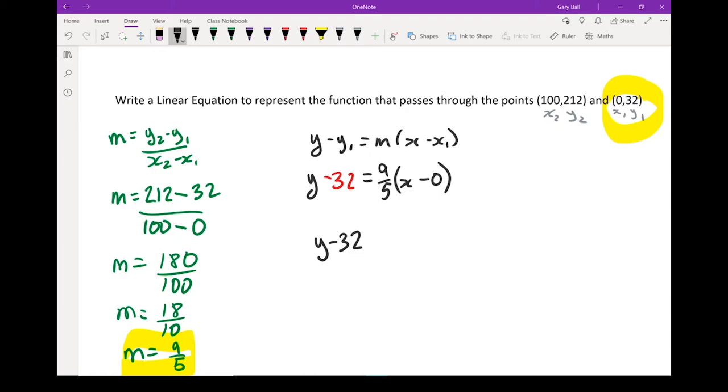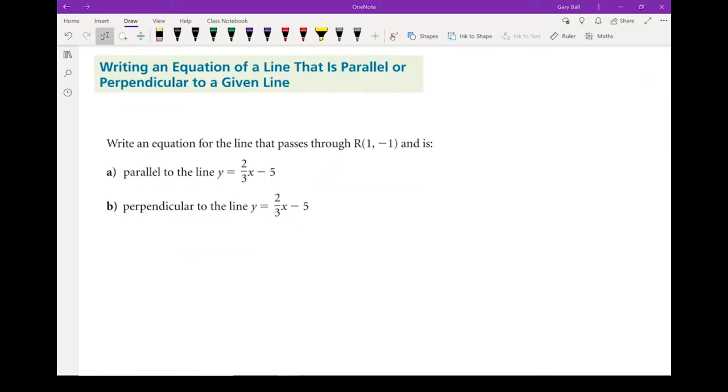y minus 32 equals 9 over 5 x. There is my equation. Let's continue manipulating our point slope form, and here's a case where the point slope form works well again.